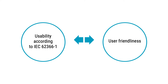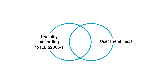Therefore, usability engineering can be seen as an integral part of design control and risk management, and you will find that you work quite closely together with the risk management team. I am a usability engineer at heart and I will show you how to design safe devices according to the IEC 62366-1 while still having great user-friendliness. I would like you to understand that usability engineering is not something that you have to do, but something that you should love to do — and in most cases, usability will overlap with user-friendliness.